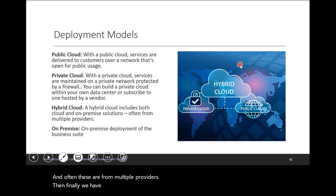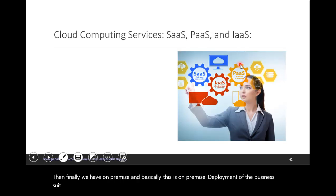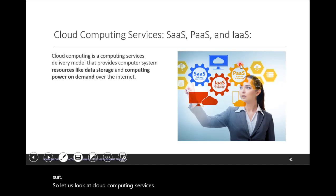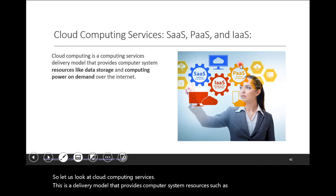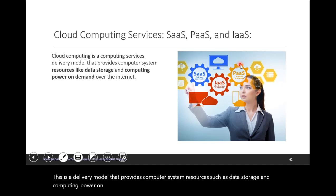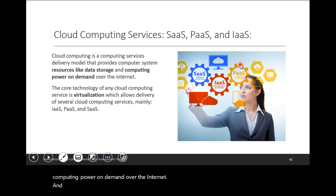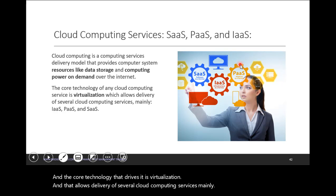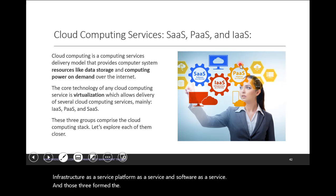Finally, we have on-premise, which is basically the on-premise deployment of the business suite. Cloud computing services is a delivery model that provides computer system resources, such as data storage and computing power, on-demand over the internet. The core technology that drives it is virtualization, and that allows delivery of several cloud computing services — mainly infrastructure-as-a-service, platform-as-a-service, and software-as-a-service. Those three form the cloud computing stack, and we are going to look at each of them in the next few slides.